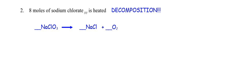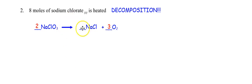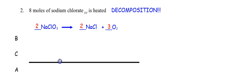Let's balance it. I found one sodium, one sodium; one chlorine, one chlorine; three oxygens on the left, two oxygens on the right. I should multiply NaCl by two and O₂ by three — now I have six oxygens on both sides. But if I have two sodiums and two chlorines on the right, I need to put a two in front of NaCl and a three in front of O₂. Now I need a BCA table — don't forget your line.